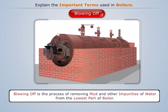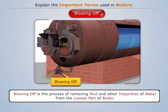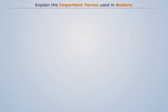Blowing off: it is the process of removing mud and other impurities present in water from the lowest part of the boiler. Now let's summarize the important terms used in boilers.